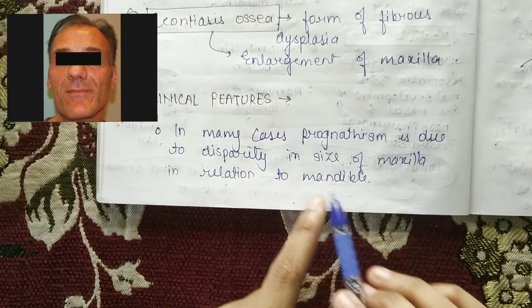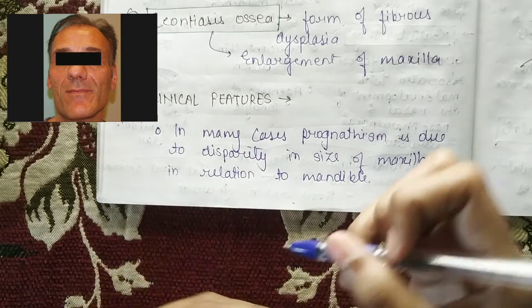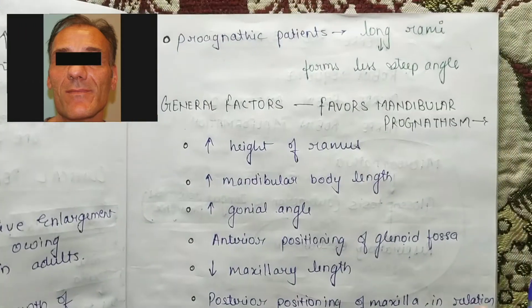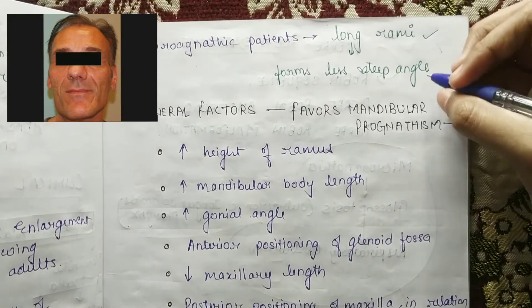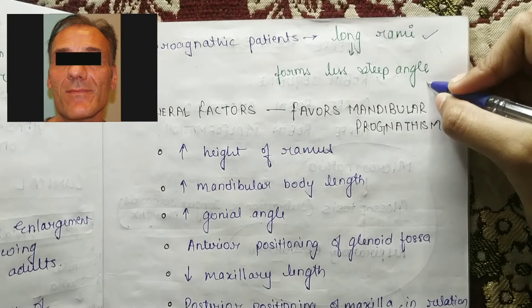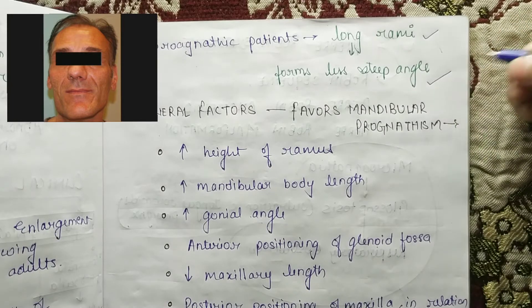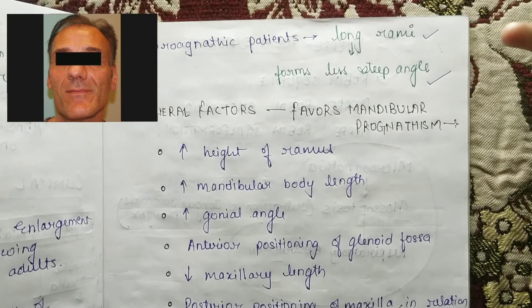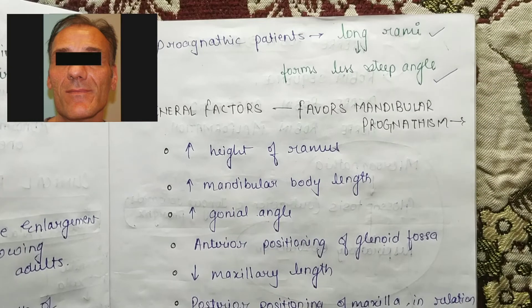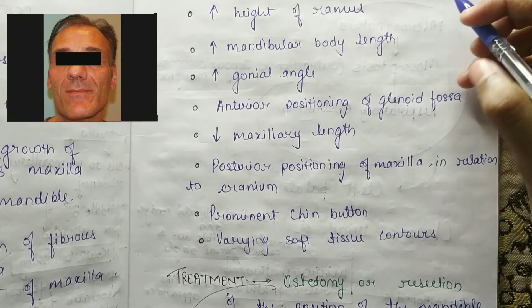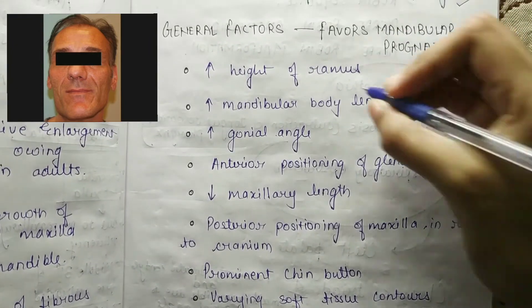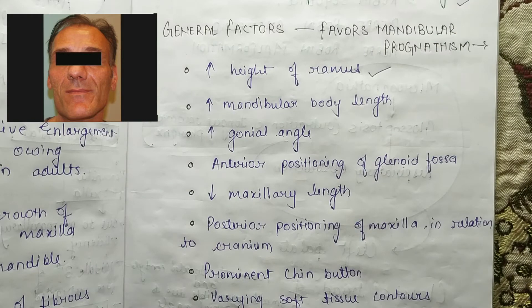Now coming to clinical features: in many cases prognathism is due to disparity in size of the maxilla in relation to the mandible. In prognathic patients, the ramus will form a less steep angle, and as a result macrognathia will increase.